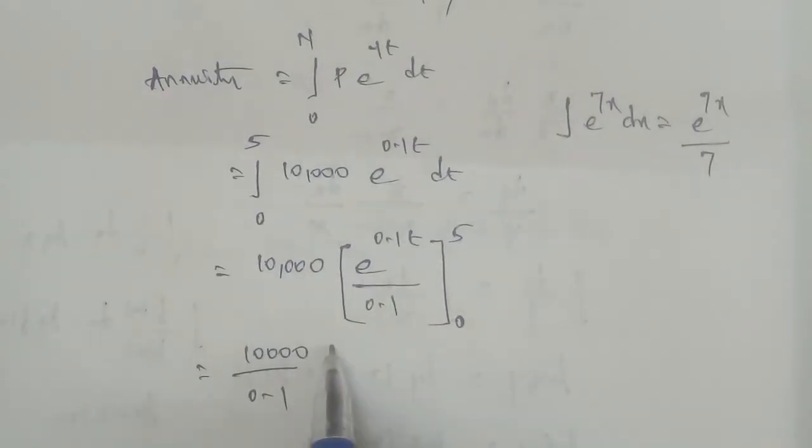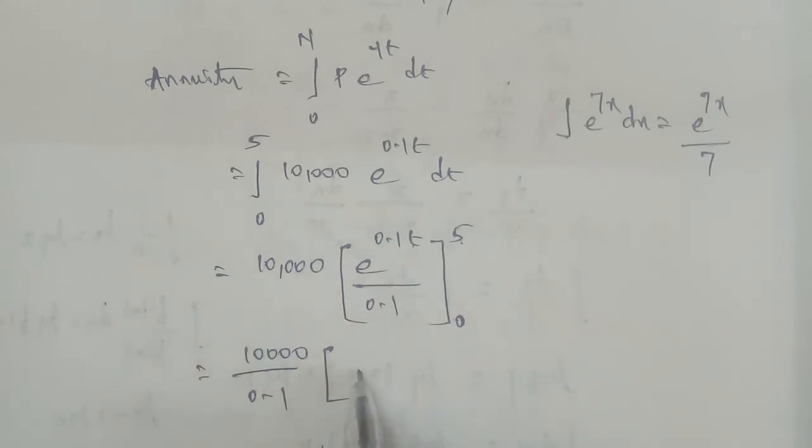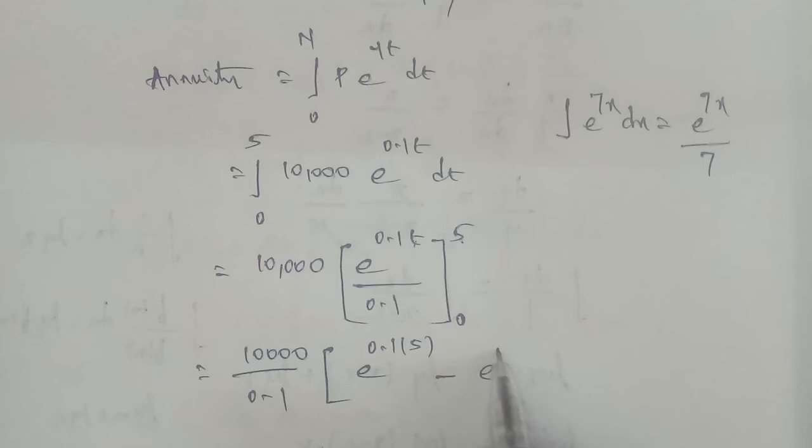Next, limit apply. So upper limit, t equals 5, so e^(0.1 times 5). Upper limit minus lower limit, minus e^(t value 0). 0 times 0.1 is 0, total e^0.